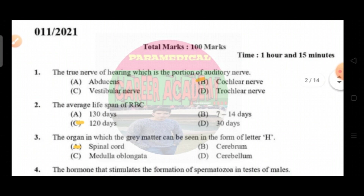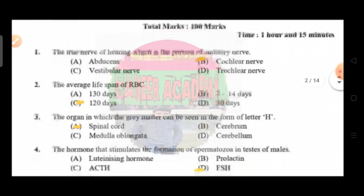Question number one: the true nerve of hearing, which is the portion of the auditory nerve. Option A is abducens, option B cochlear nerve, option C vestibular nerve, and option D is trochlear nerve. The correct answer is option B, that is cochlear nerve.